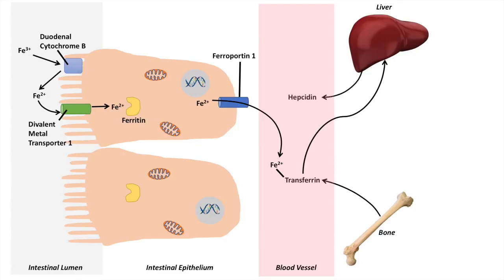Hepatocytes will release something known as hepcidin. Hepcidin will then travel back through the bloodstream to the enterocytes in your intestine and will actually inhibit ferroportin 1 so that you can no longer transport Fe2+ into the bloodstream. So hepcidin regulates the amount of iron your body uptakes so it doesn't uptake too much. High transferrin and high iron will cause release of hepcidin, which inhibits ferroportin 1 and inhibits blood uptake of iron.